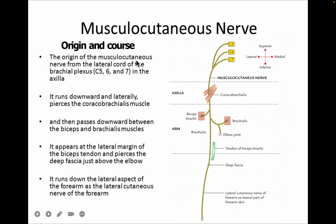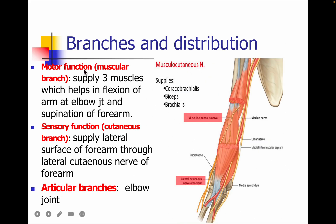The musculocutaneous nerve originates from the lateral cord of the brachial plexus, pierces the coracobrachialis muscle, and runs between the biceps brachii and brachialis muscles. It appears near the lateral margin of the biceps tendon and pierces the deep fascia near the elbow joint, continuing as the lateral cutaneous nerve of the forearm. Motor function: it supplies biceps brachii, brachialis, and coracobrachialis. Sensory function: it supplies the lateral surface of the forearm via the lateral cutaneous nerve of the forearm. Articular branch: it supplies the elbow joint.